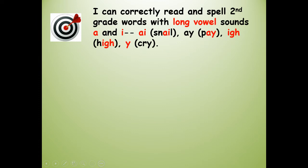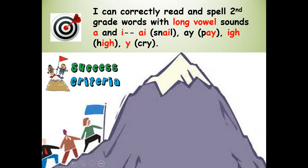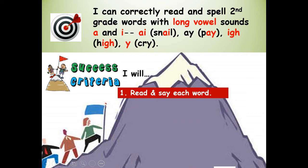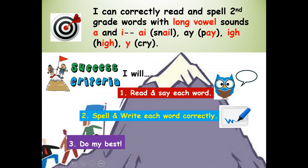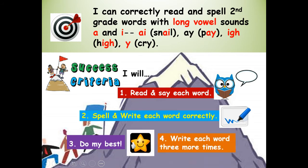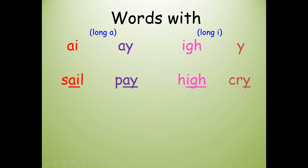Let's get started. Our learning target: I can correctly read and spell second grade words with the long vowel sounds A and I. A-I as in snail, A-Y as in pay, I-G-H as in high, and Y as in cry. Success criteria — how will you know you're successful? I will read and say each word. I will spell and write each word correctly — that's why you have a piece of paper and a pencil. And I will do my best. The spelling words have one of four vowel patterns: A-I as in snail, A-Y as in pay, I-G-H as in high, and Y as in cry.